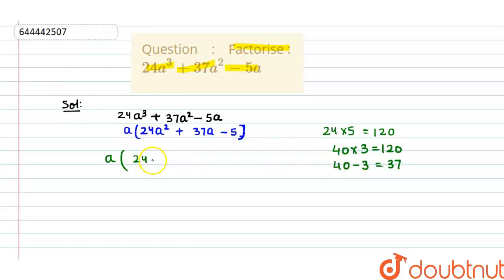So it can be written as 24a² plus in place of 37a here, we will split it as 40a - 3a - 5.